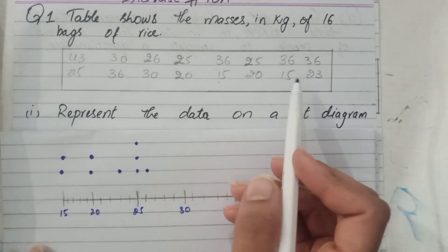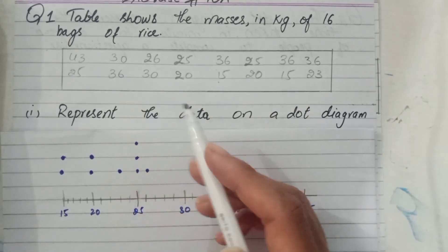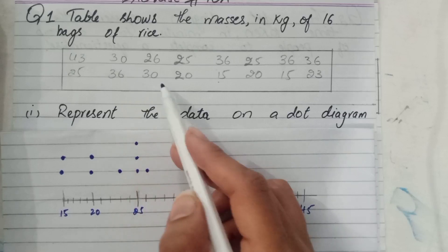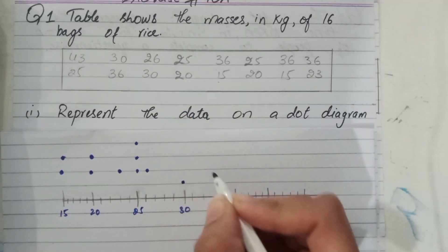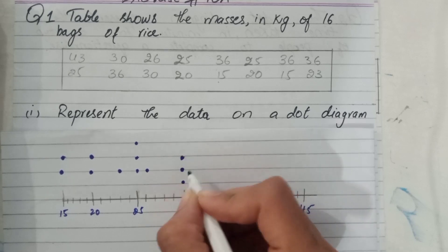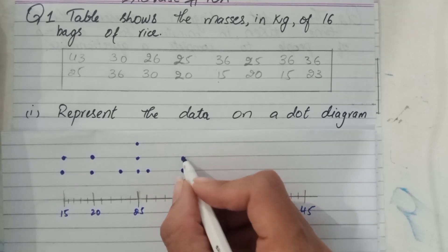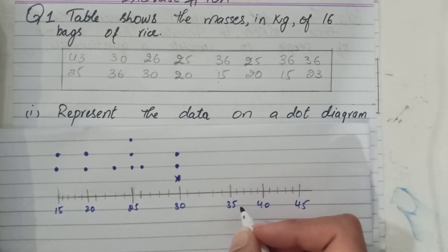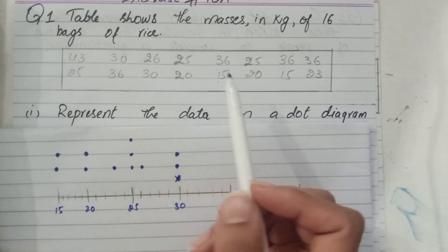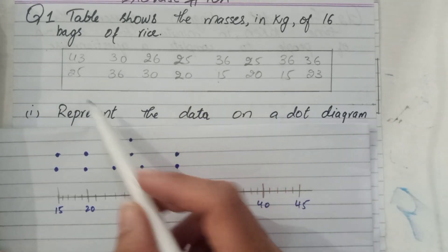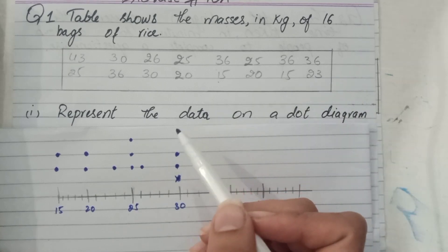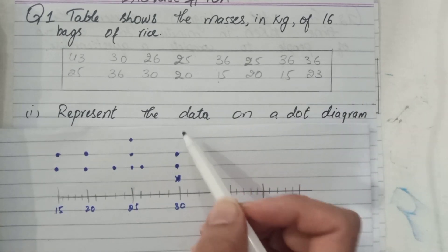Then 27, and 30 — there are 2 values of 30. There is no 31, no 32, and no 33. Then 34 and 35.